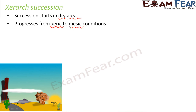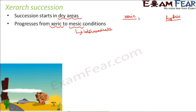Now what do we mean by mesic conditions? Mesic means middle — that is, an intermediate situation where you do not have complete scarcity of water but at the same time you do not have too much water. So xeric is one extreme which is completely dry, and hydric is the other extreme which is completely full of water. In between these two lies the mesic condition. So in xerarch succession, xeric conditions get transformed into mesic conditions.